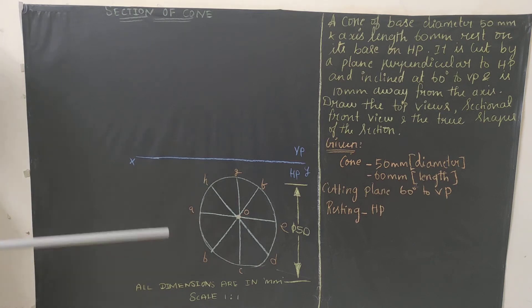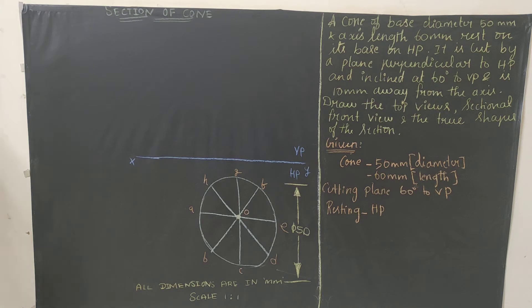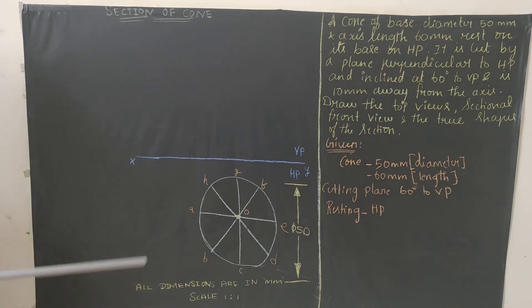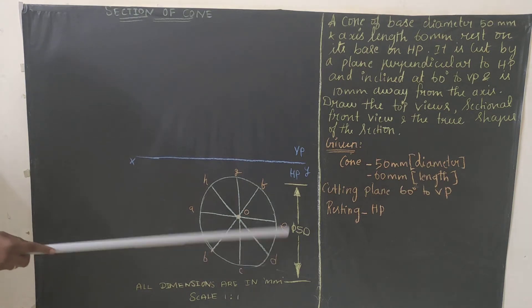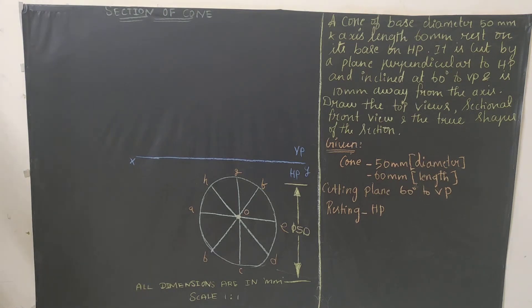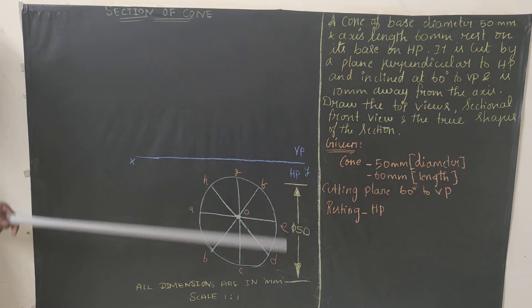When you draw with the compass and proper measurement you will get a neat circle. Keep the center of the compass here and draw the circle, then divide this circle into eight equal parts and name them A, B, C, D, E, F, G, H. Since it's a cone, we will have only eight namings and the center of the axis meets with the apex, which is point O.